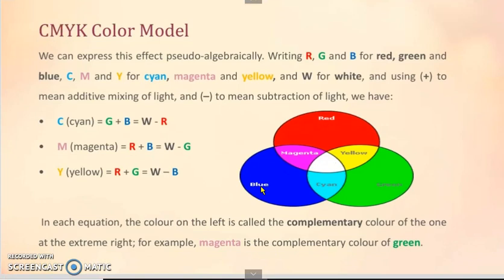We can also express this effect pseudo-algebraically writing R, G, B for red, green and blue, and CMY for cyan, magenta and yellow, and W for white. We will use plus sign to mean additive mixing of light and minus sign to mean subtraction of light. Cyan equals green plus blue, that is white minus red. Magenta equals red plus blue, that is white minus green. Yellow equals red plus green, that is white minus blue. In each equation, the color on the left is called the complementary color, complementary color of the one at the extreme right.